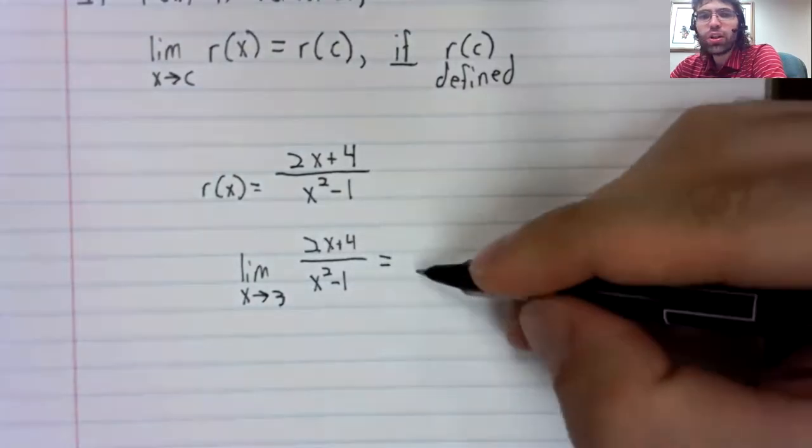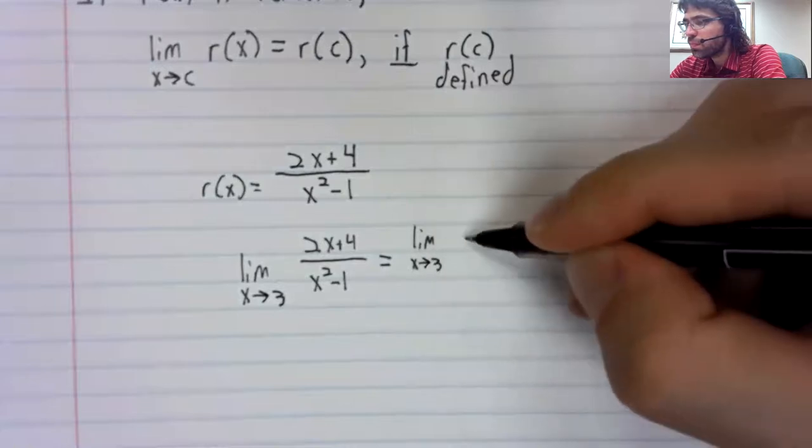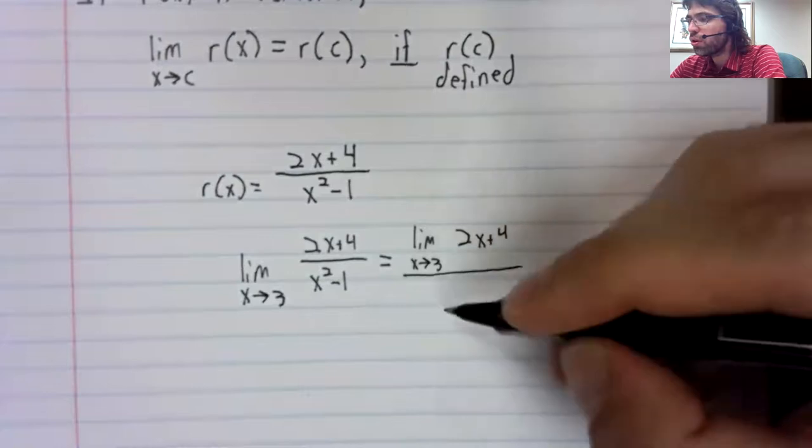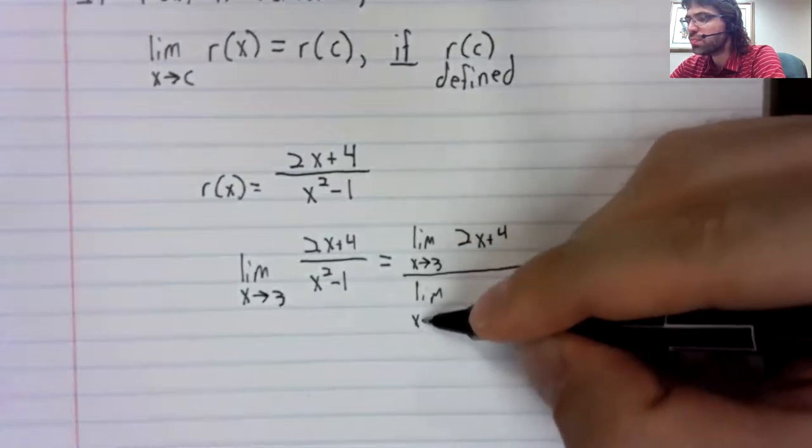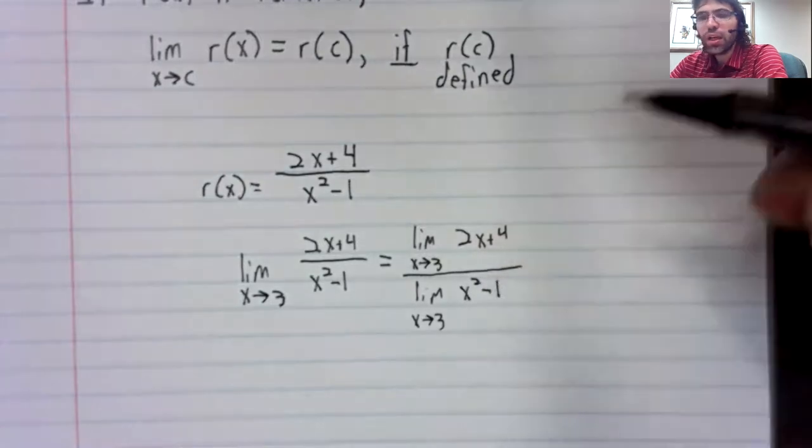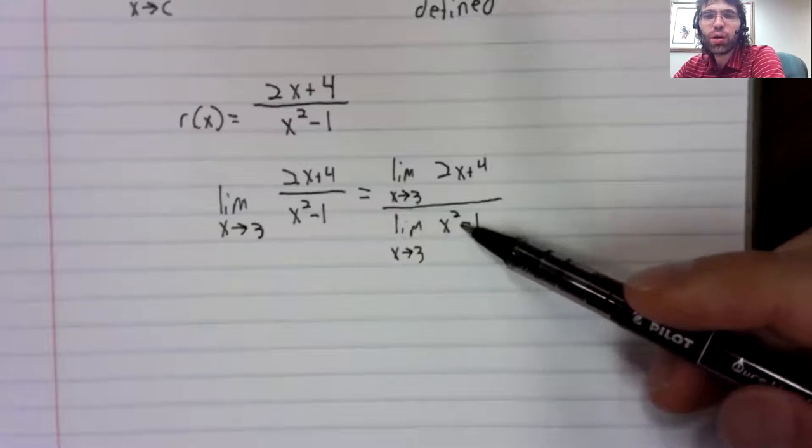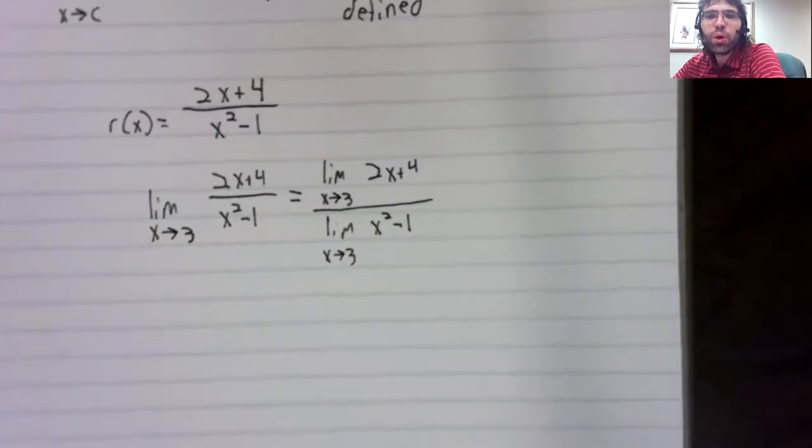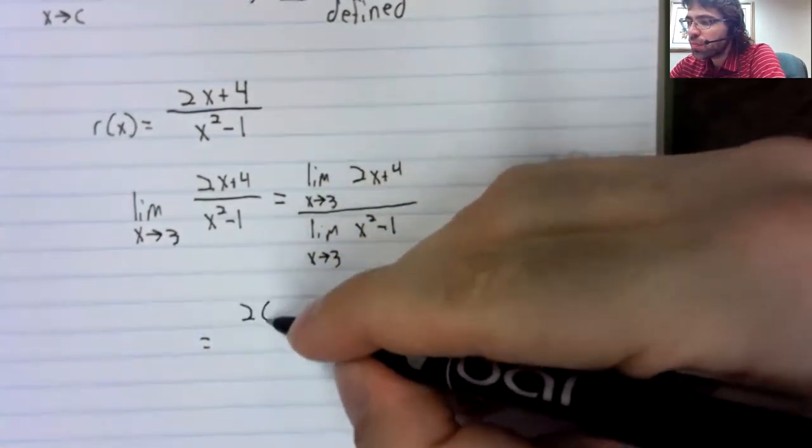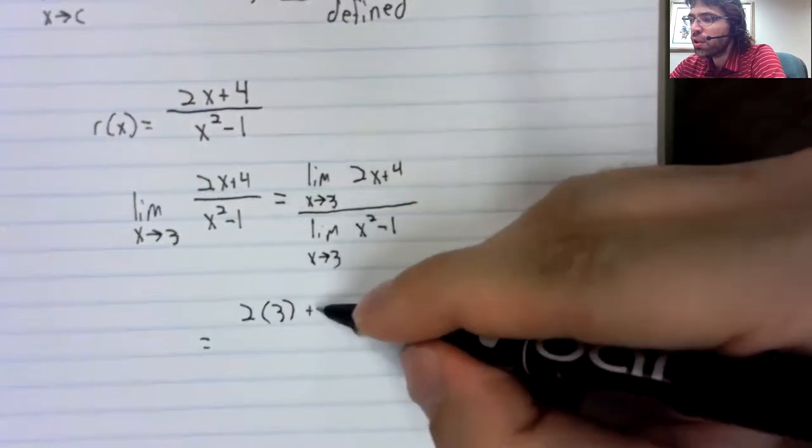Well, the limit of a quotient is the quotient of the limits. And because this is a polynomial, and this is a polynomial, we can find both these limits by plugging this number in.